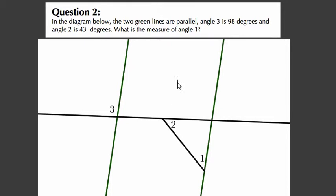In the diagram below, the two green lines are parallel - this line right here is parallel to this one. Angle 3 is 98 degrees, so we can write that in here.